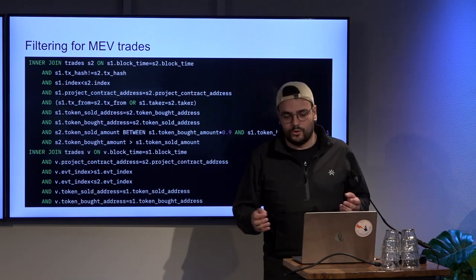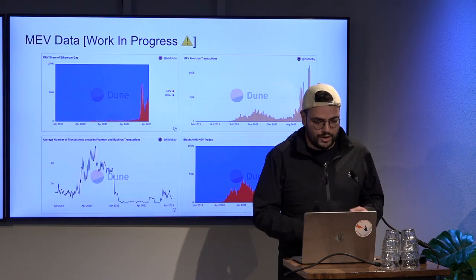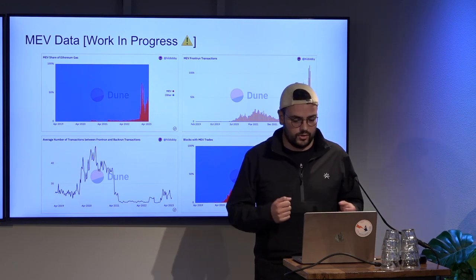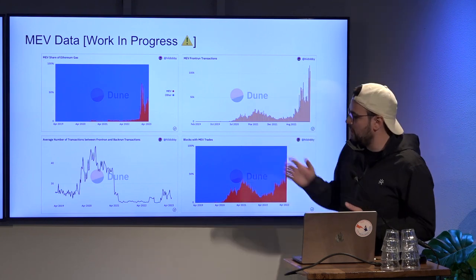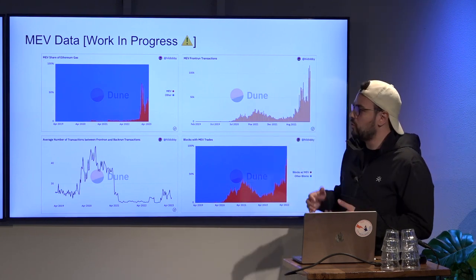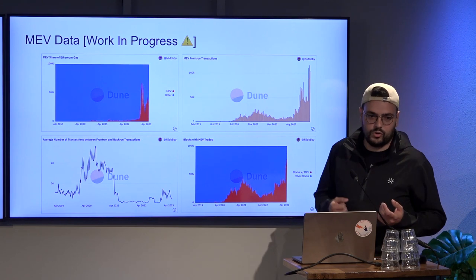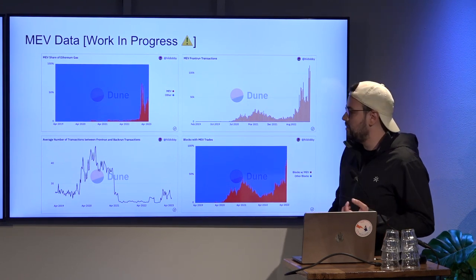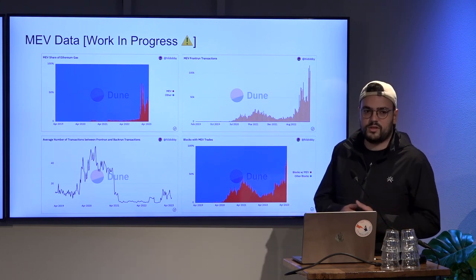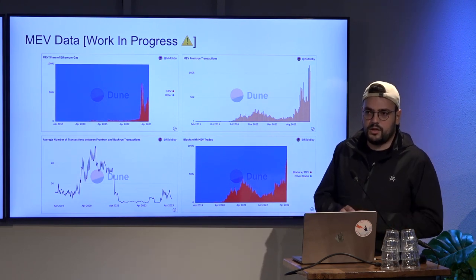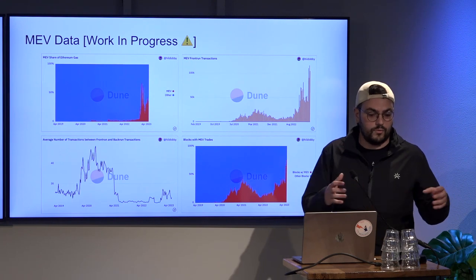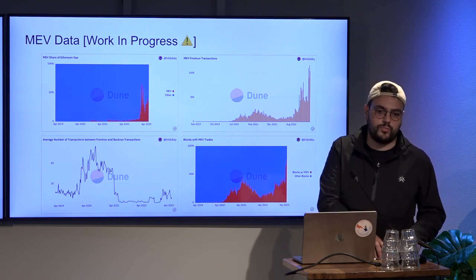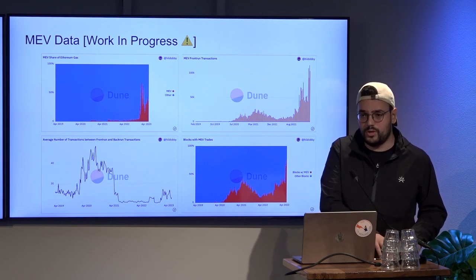Those are fairly simple heuristics that I want to put out there on Spellbook — I'm working on having Spellbook data on this. Here are a few charts I looked into. I just want to show the power of how Dune can be used to leverage these kinds of topics that are heavily discussed but don't necessarily have a lot of data backing them.